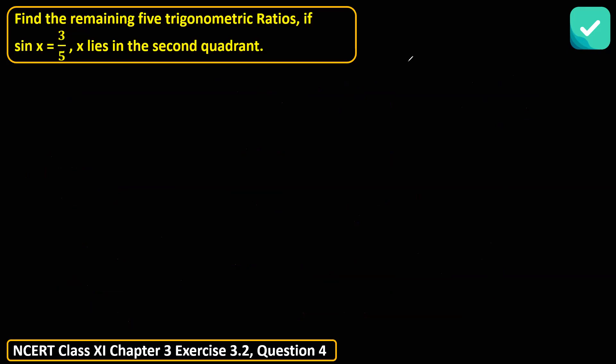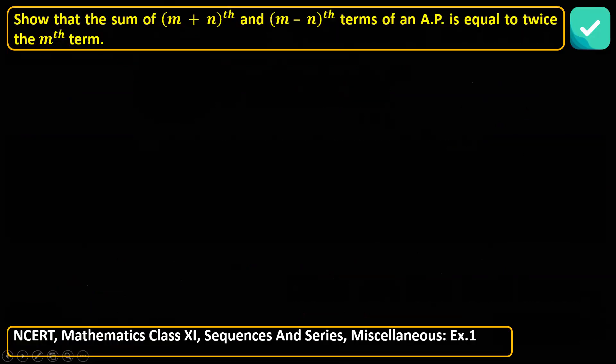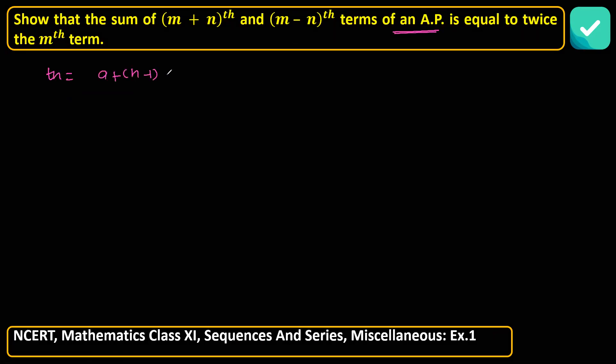This question: show that the sum of m plus nth term and m minus nth term of an AP is equal to twice the mth term. How can we solve this question? Nth term we know, and they're talking about one AP. The nth term of an AP is a plus n minus 1 into d. They're asking you the sum, the addition of m plus nth term and m minus nth term.